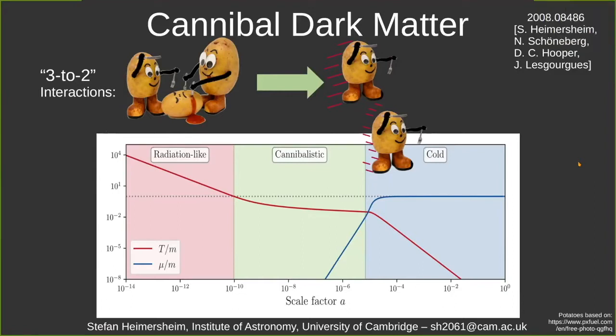This leads to an interesting temperature evolution. In the beginning, just like any particle, it behaves like radiation where the temperature is much higher than the mass. But as soon as it gets non-relativistic, across this point shown in the green region where the red line is the temperature over the mass, you see the temperature gets constant. This is because the three-to-two interaction is actually relevant, and all the mass converted to energy keeps the temperature almost constant, going like one over log a.